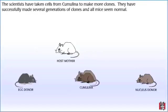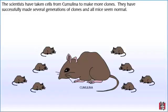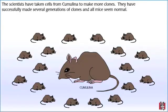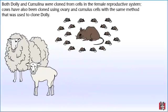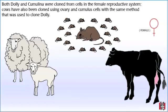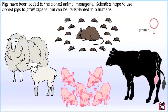The scientists have taken cells from Cumulina to make more clones, successfully producing several generations of clones, and all mice seem normal. Dolly the sheep died at the age of six. Since then, several other animals have also been cloned. Cows have been cloned using ovary and cumulus cells with the same method used to clone Dolly. Pigs have also been added to the cloned animal menagerie, and scientists hope to use cloned pigs to grow organs that can be transplanted into humans.